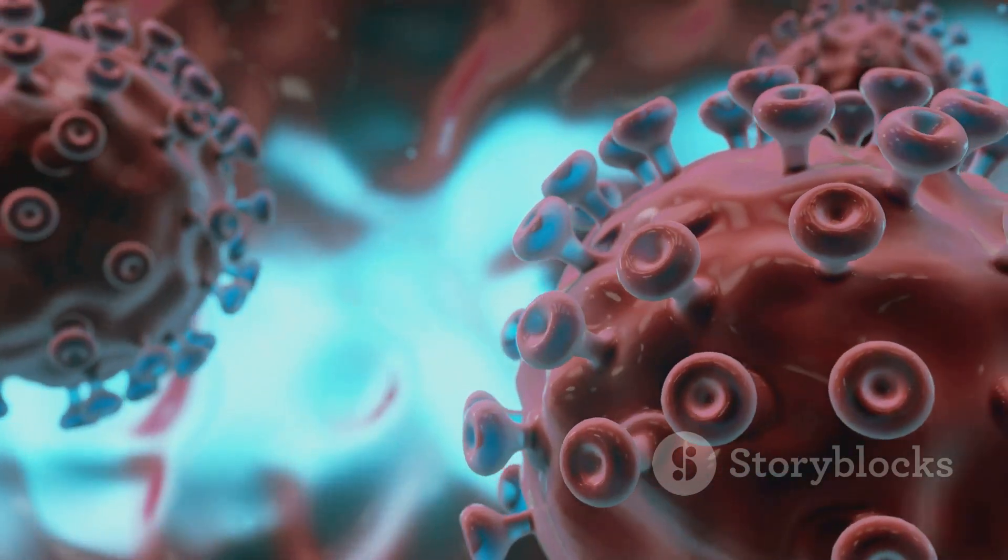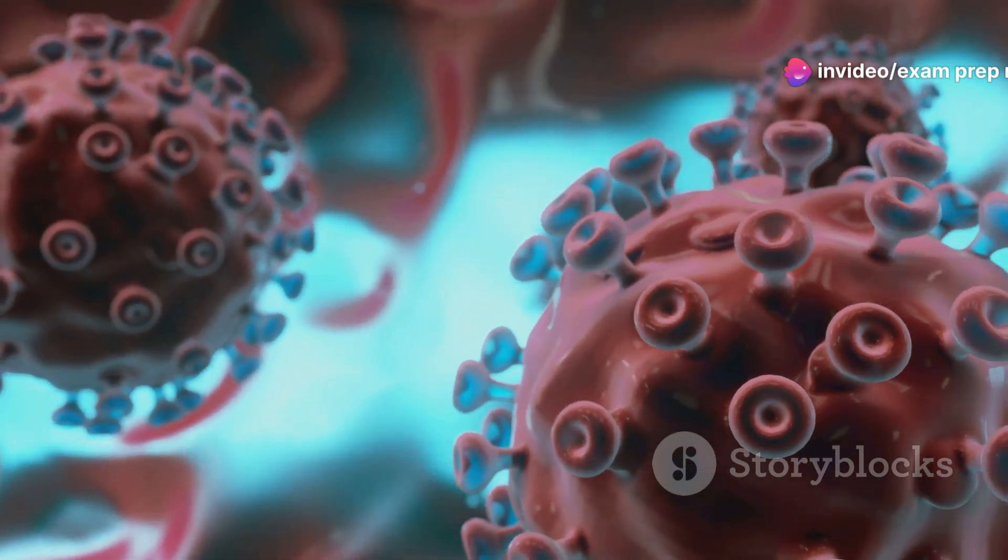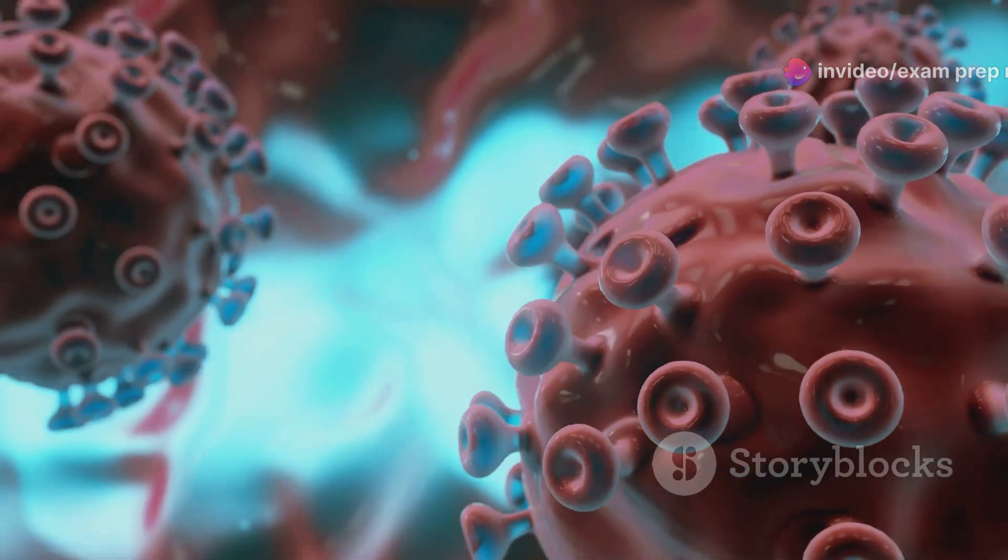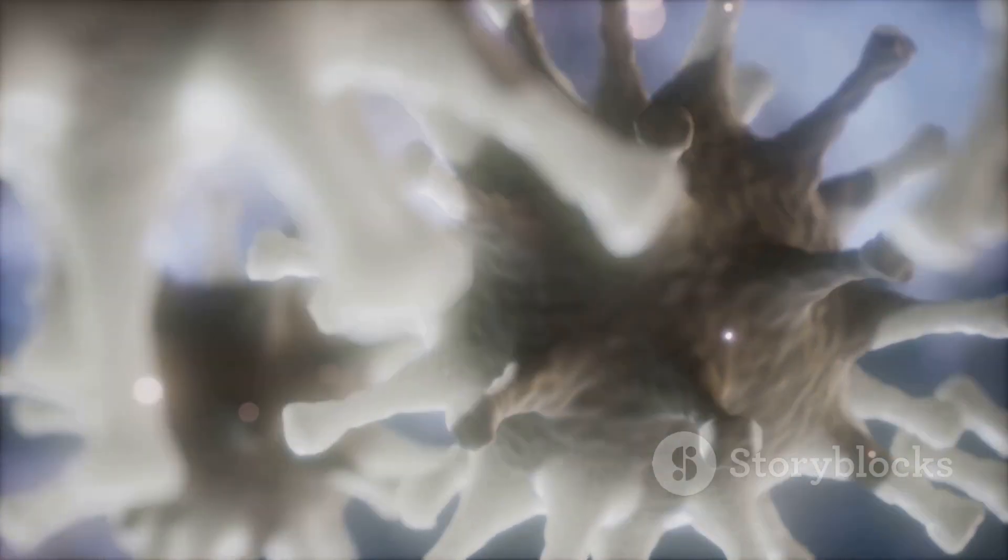Viruses have genetic material, either DNA or RNA, enclosed in a protein coat called a capsid and they may even have an envelope. Viroids consist of single-stranded circular RNA without a protein coat. Prions, on the other hand, are simply misfolded proteins.